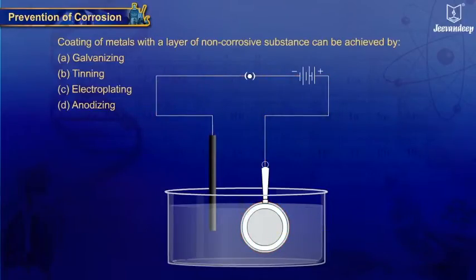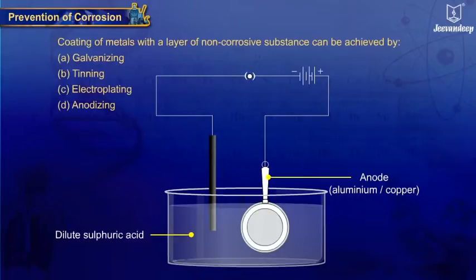In this technique, the metal aluminium article or copper article is used as anode, and the electrolyte used is dilute sulphuric acid. The cathode is a plate or rod made of a material chemically inert in the acidic electrolyte, such as carbon, stainless steel, or nickel.